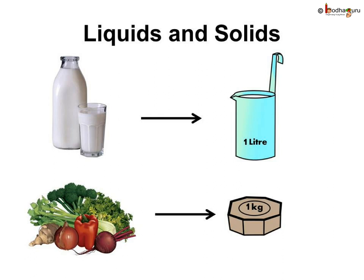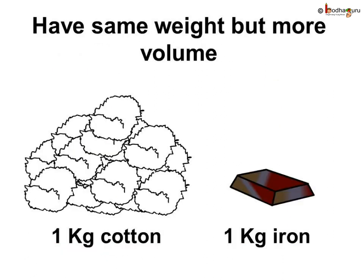When we buy vegetables or sweets, they are measured in kilograms or grams. We buy these by measuring how heavy they are. We can measure the volume of a liquid in liters and the weight of a solid in kilograms. Normally when we increase the volume, the weight of the substance also increases.